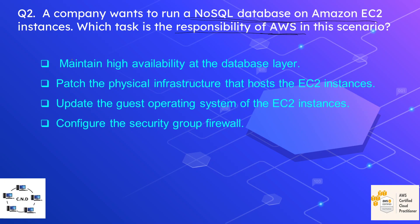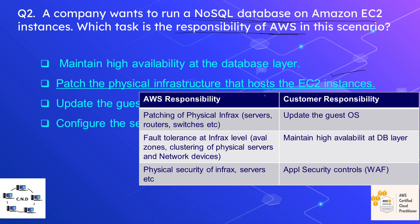The options are: option one, maintain high availability at the database layer; option two, patch the physical infrastructure that hosts the EC2 instances; option three, update the guest operating system of the EC2 instances; option four, configure the security group firewall. The correct option is that AWS is responsible for patching the physical infrastructure that hosts the EC2 instances, while the rest are the customer's responsibility.